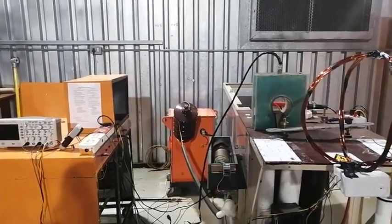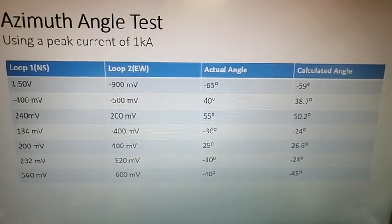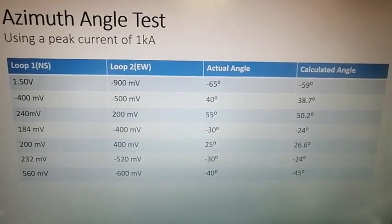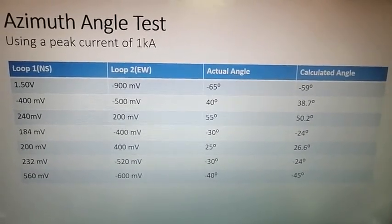The data shows the actual azimuth angles for the location of the source and the angles measured by the magnetic direction finder.